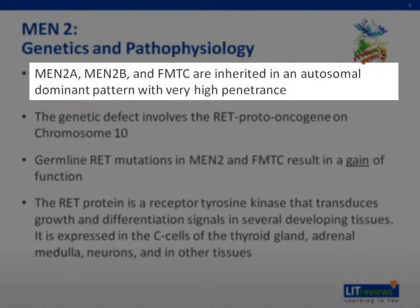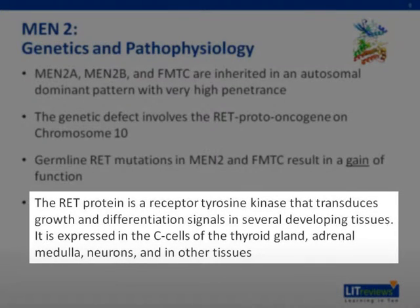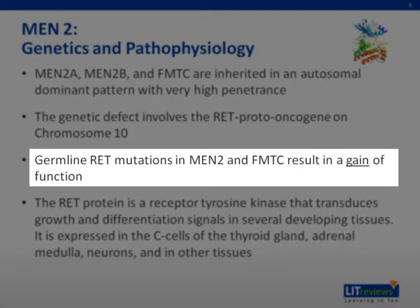The MEN syndromes are inherited in an autosomal dominant pattern with very high penetrance. The genetic defect involves the RET proto-oncogene on chromosome 10. The RET protein is a receptor tyrosine kinase that transduces growth and differentiation signals in several developing tissues, and is expressed in the C cells of the thyroid gland, adrenal medulla, neurons, and other tissues. The germline RET mutations in MEN2 and FMTC result in a gain of function, which differs from almost all other inherited cancer syndromes, which involve inherited loss-of-function mutations that inactivate tumor suppressor proteins.